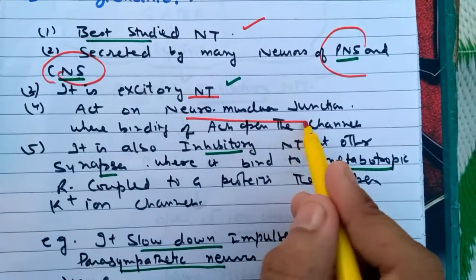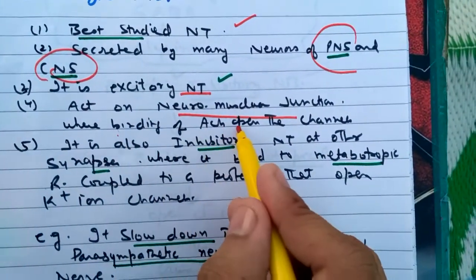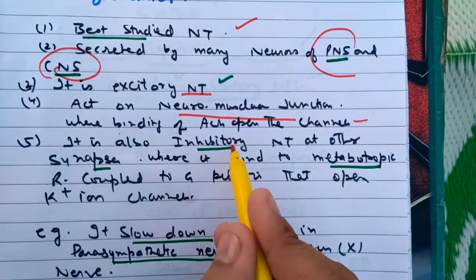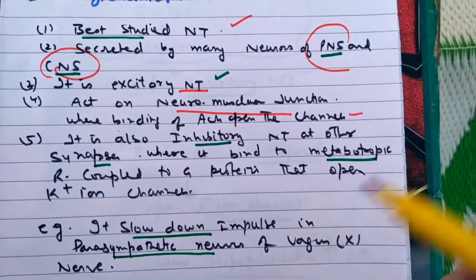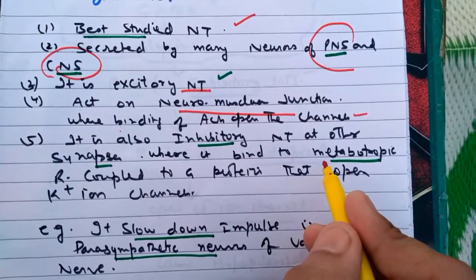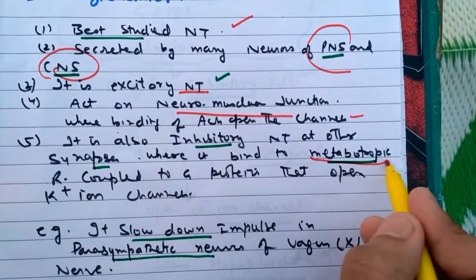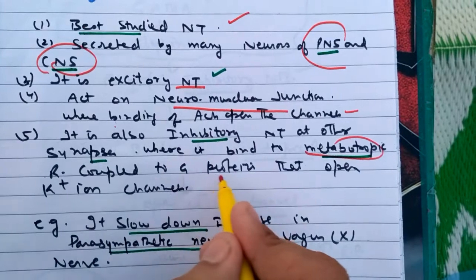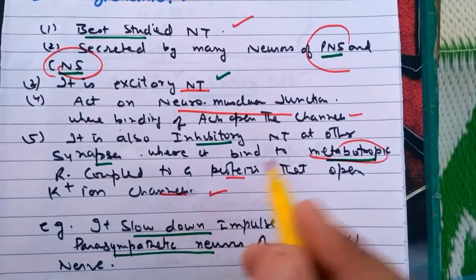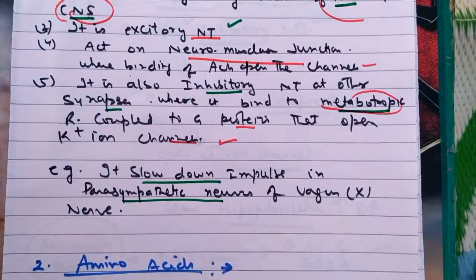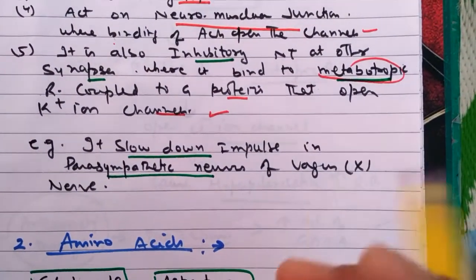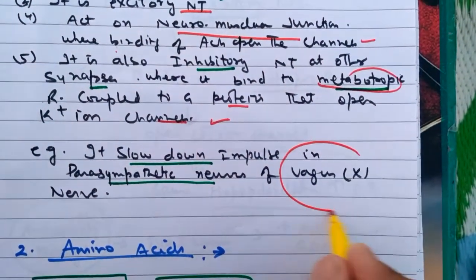Acetylcholine is an excitatory neurotransmitter acting on the neuromuscular junction upon binding to the channel. It also has inhibitory nature depending upon the receptor where it is binding — when it binds to the metabotropic receptor coupled to G-protein, it acts as an inhibitor, slowing the nerve impulse in the parasympathetic neuron of the vagus nerve, the 10th cranial nerve.